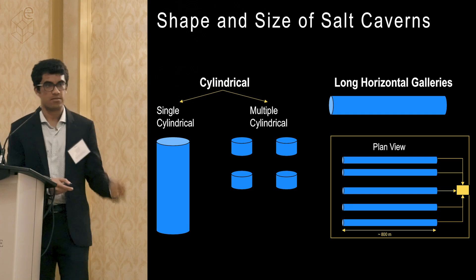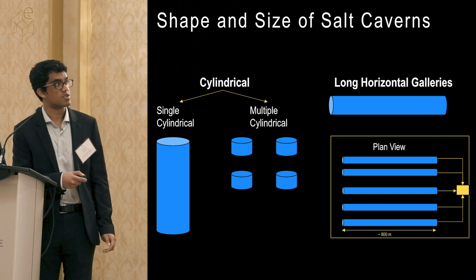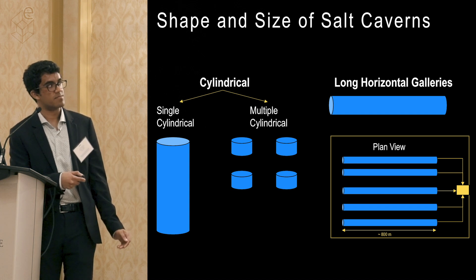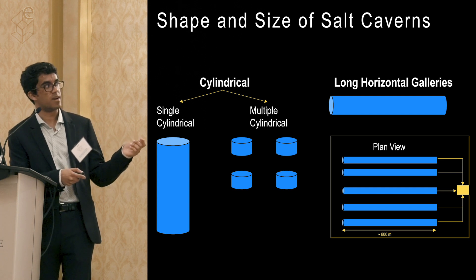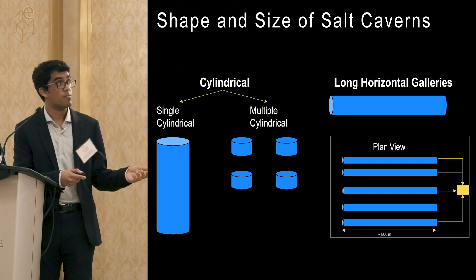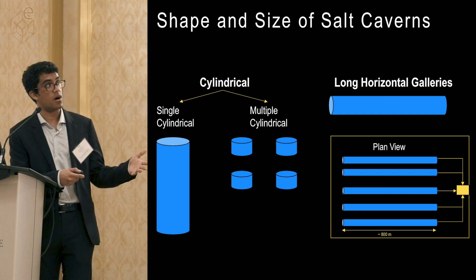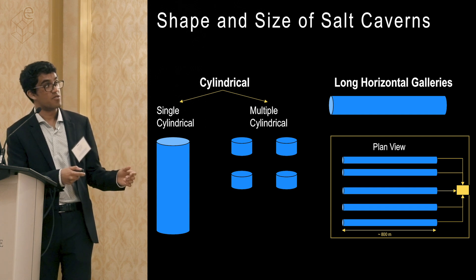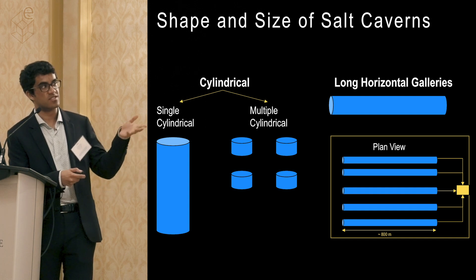We can then look at the shape and size of our caverns. We go with the traditional vertical long cavern, with length along the vertical axis — this is what's been used in Huntorf and McIntosh, Alabama. It's easiest to solution mine. If you don't have a thick enough salt deposit, you could use multiple cylindrical caverns — four of these to match the volume of one vertical cavern. If you have an even thinner deposit with high demand, you could do a long horizontal gallery — like a hot dog versus a hamburger. These are much harder to solution mine but viable depending on environmental constraints.